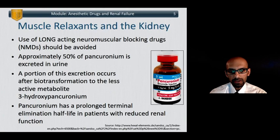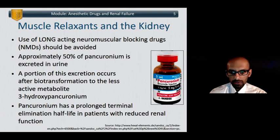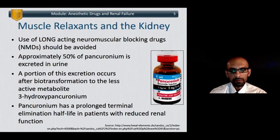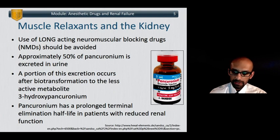We're going to start with the drug class that gets probably the most attention when managing the patient with renal insufficiency, and that's muscle relaxants. You should definitely know that long-acting muscle relaxants, particularly pancuronium, should be avoided in renal failure. This drug isn't really available much anymore in the U.S., but there are parts of the world where it is still available. It is a long-acting, non-depolarizing, aminosteroid muscle relaxant that is heavily dependent on renal excretion for its clearance — clearly not a wise choice for patients with renal insufficiency. A portion of its excretion occurs after biotransformation to a less active metabolite, 3-hydroxypancuronium. Definitely avoid this in renal failure.